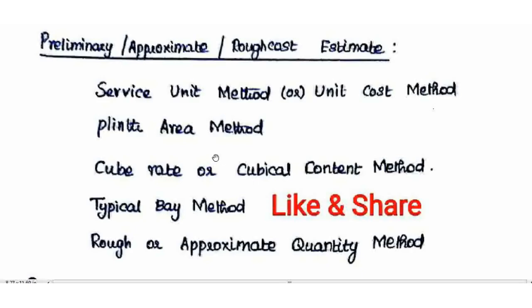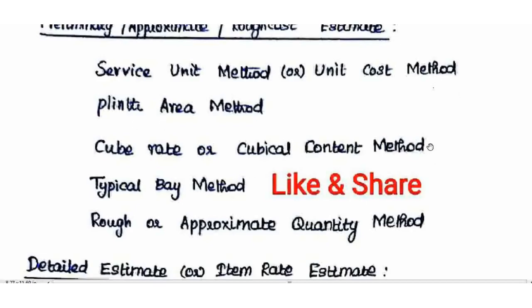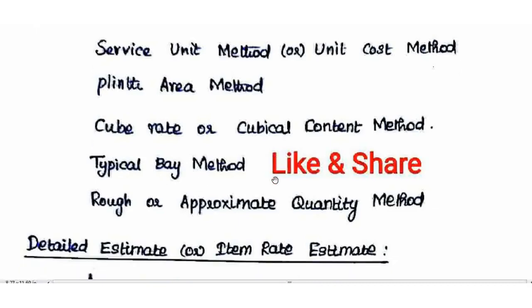The built-up area is multiplied by length and width. Next is the Cubed Rate or Cubical Method. In this method, we calculate the height of the building as well. In the Plinth Area method we use length and width; in the Cubed Rate method we include height — measured from floor level to the top of the roof. For sloped roofs, height is measured to the middle of the slope.